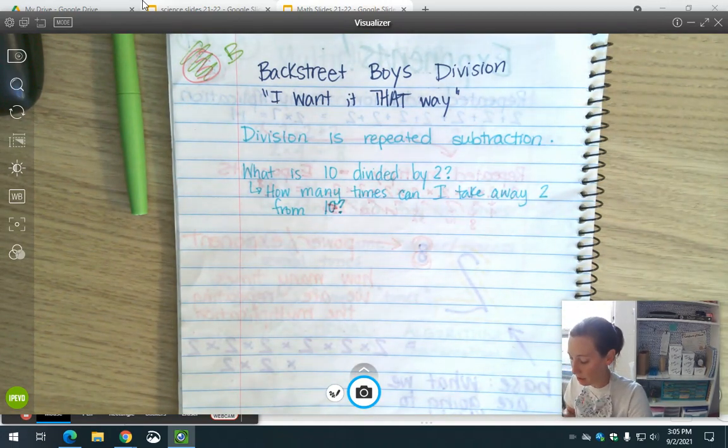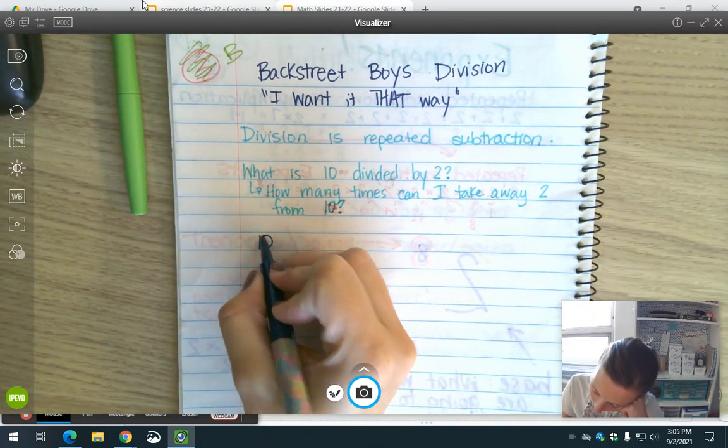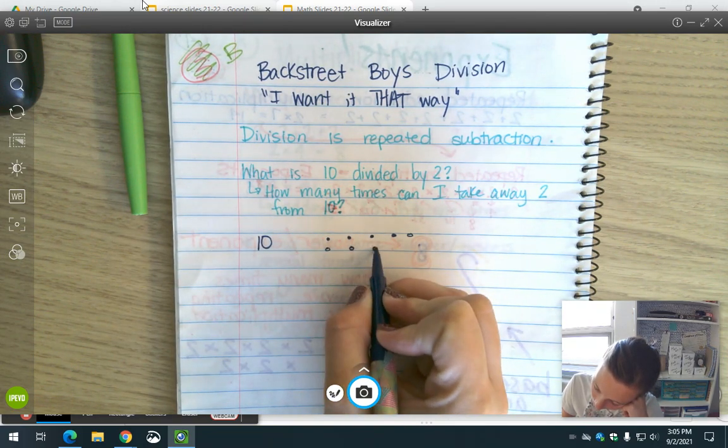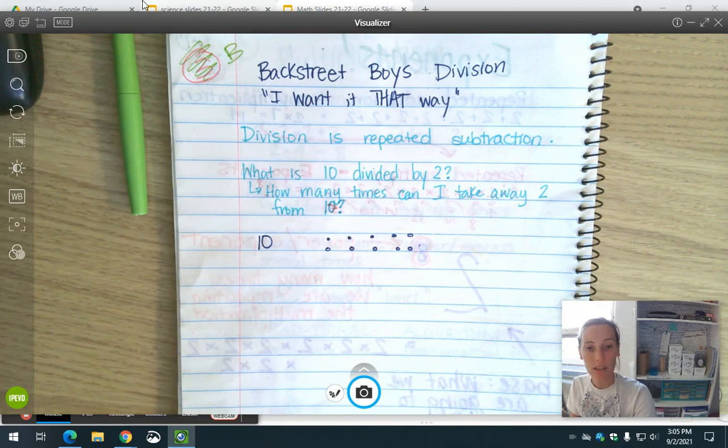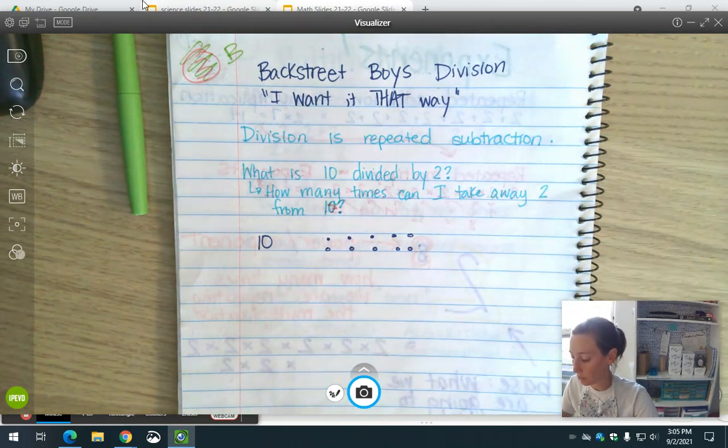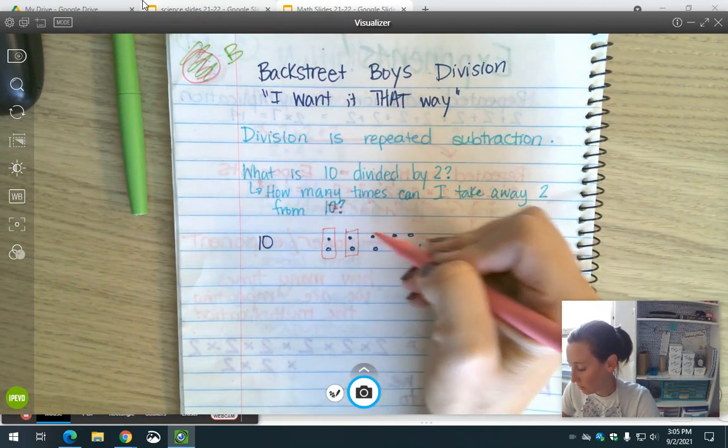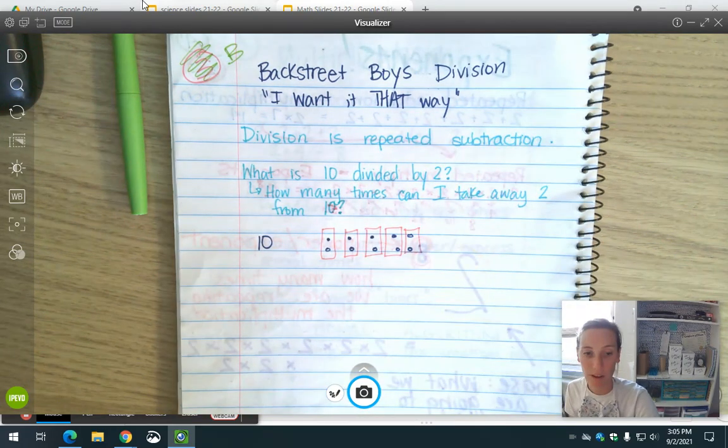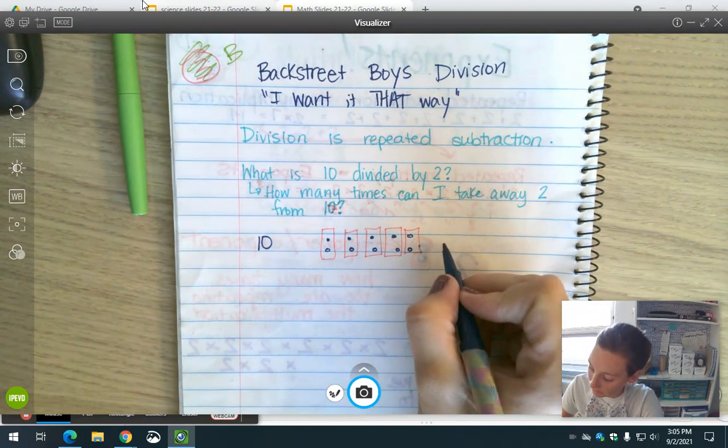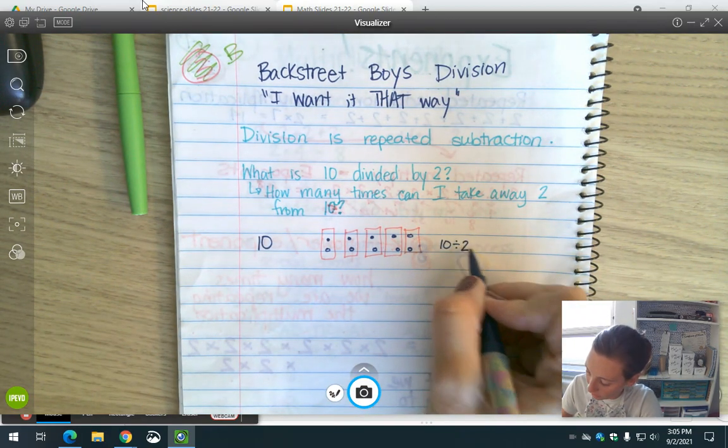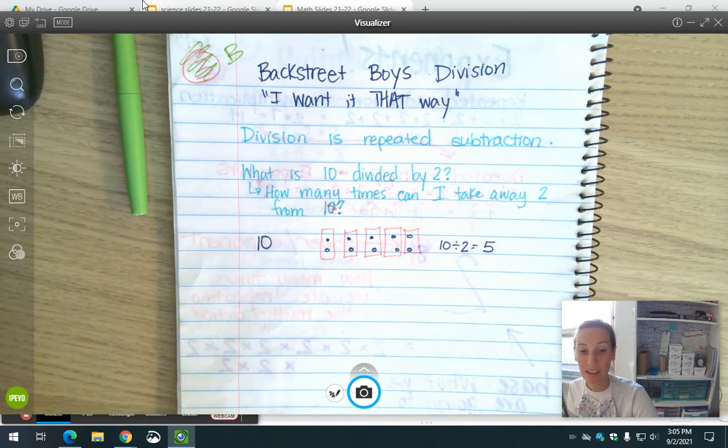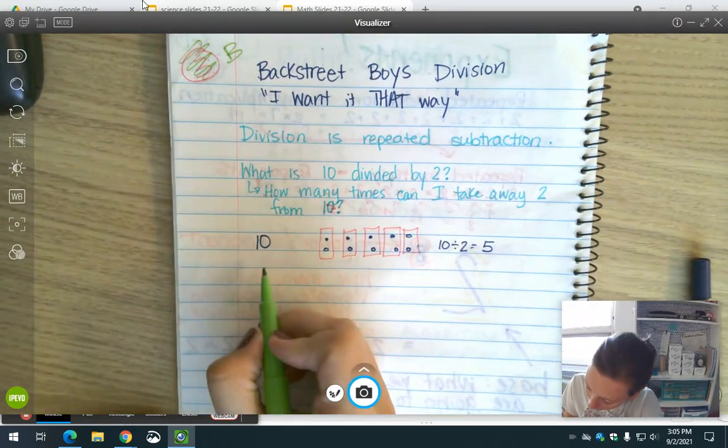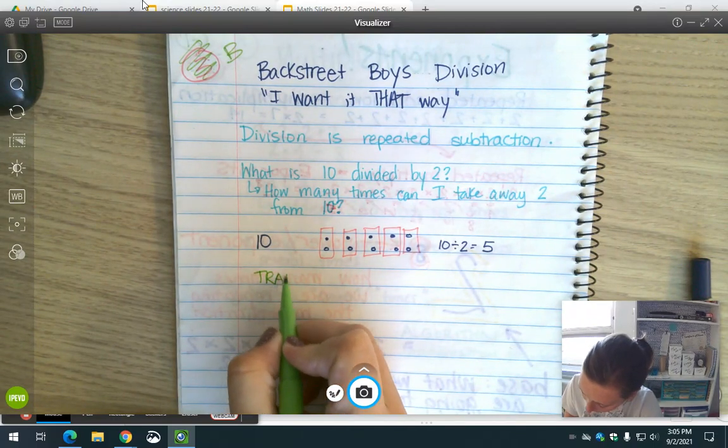When we think about that, if we have 10 dots and we want to know how many groups of 2 we can make, we can make 5 groups of 2. With the traditional algorithm, this is where you finally come into the algorithm the way you need to do it.